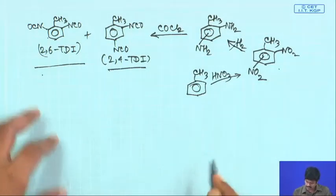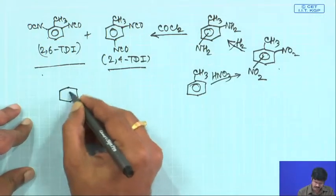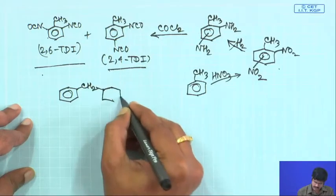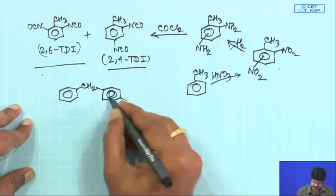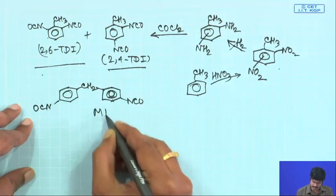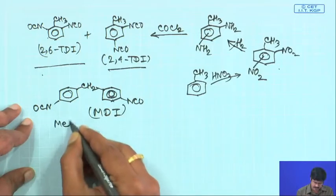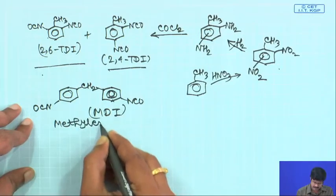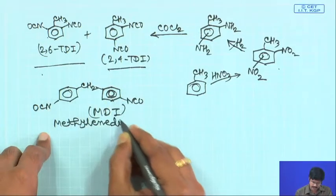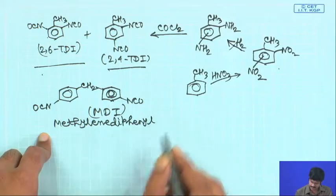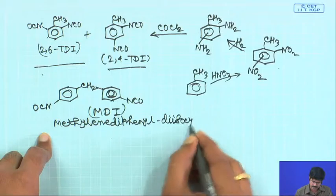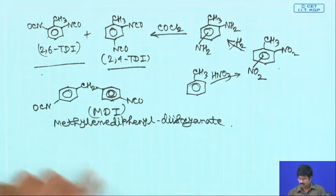Another diisocyanate also used quite commonly is methylene diphenyl isocyanate, typically called MDI. You have a methylene group flanked by two phenyl units — that is why it is methylene diphenyl diisocyanate.